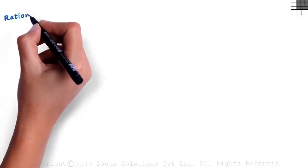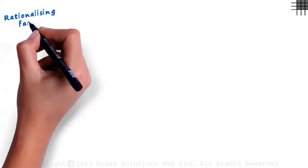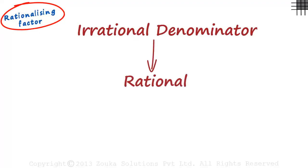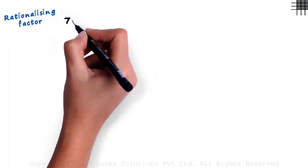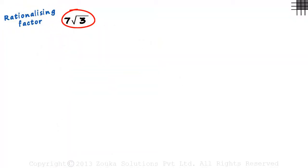What is a rationalizing factor? In the previous video, we used the rationalizing factor to make an irrational denominator rational. Consider an irrational number like 7 root 3. How do we find the rationalizing factor of this irrational number? Let's understand the concept of a rationalizing factor first.